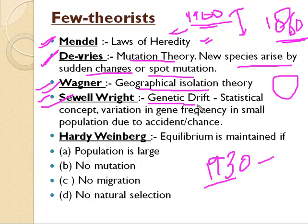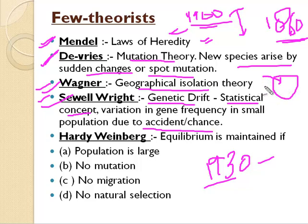Sewell Wright gave the concept of genetic drift. Genetic drift is a statistical and mathematical concept, similar to Wagner's theory. It refers to variation in gene frequency in a small population due to accident or chance. For example, if a population is trapped on a geographical island, some genes will be more prevalent in that population and will continue to increase in proportion over generations.